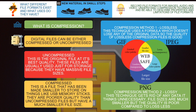There are two different methods of compression. Compression method one is called lossless. When we talk about lossless compression, we can shrink the file size down but we can always return it to its original size. This technique uses a formula which doesn't lose any of the original data, so the quality of a lossless compression file is good. At any point, if you compress a file using the lossless method, you can return it back to its original size.